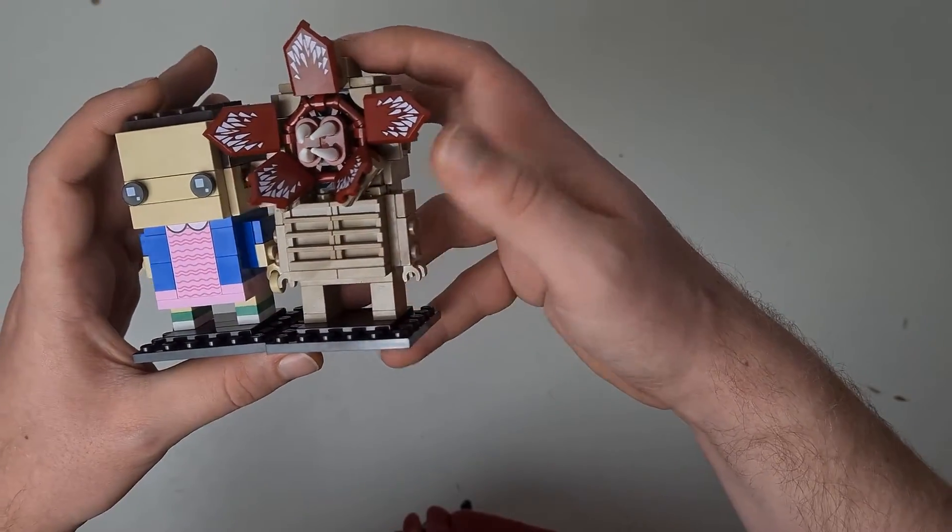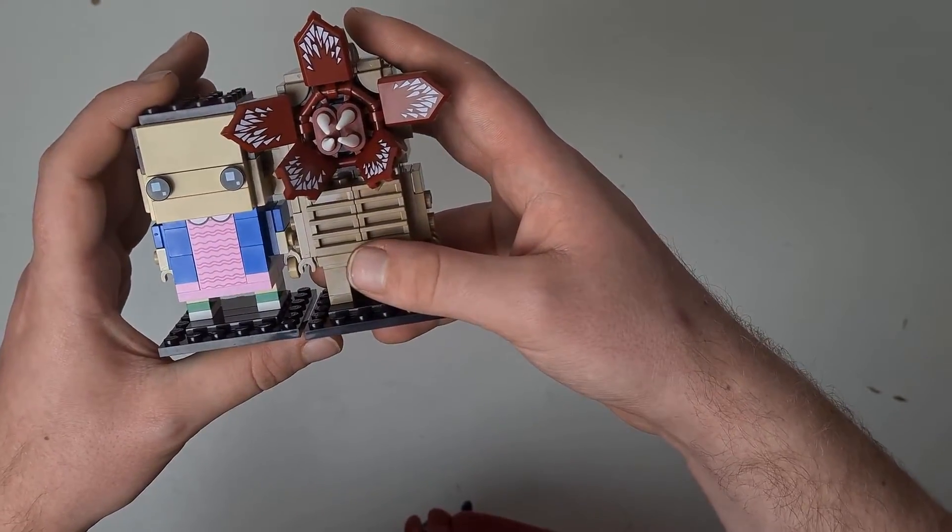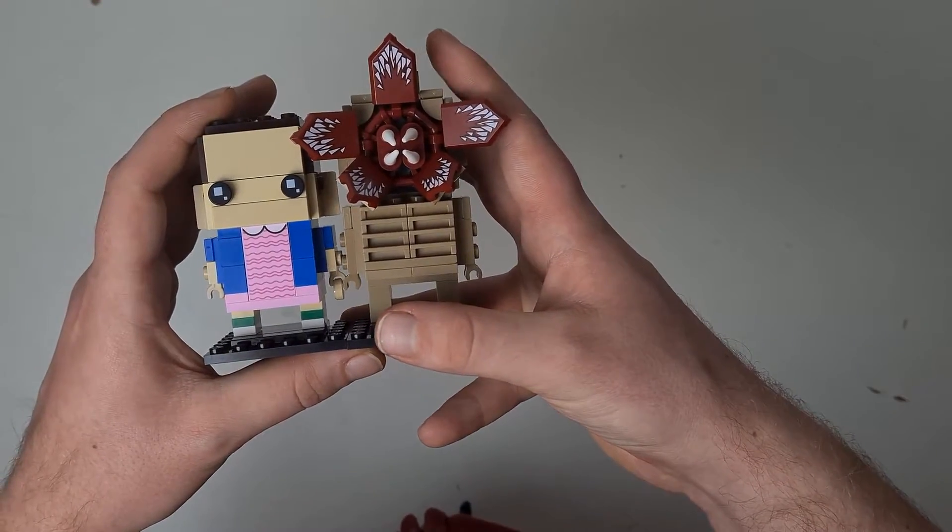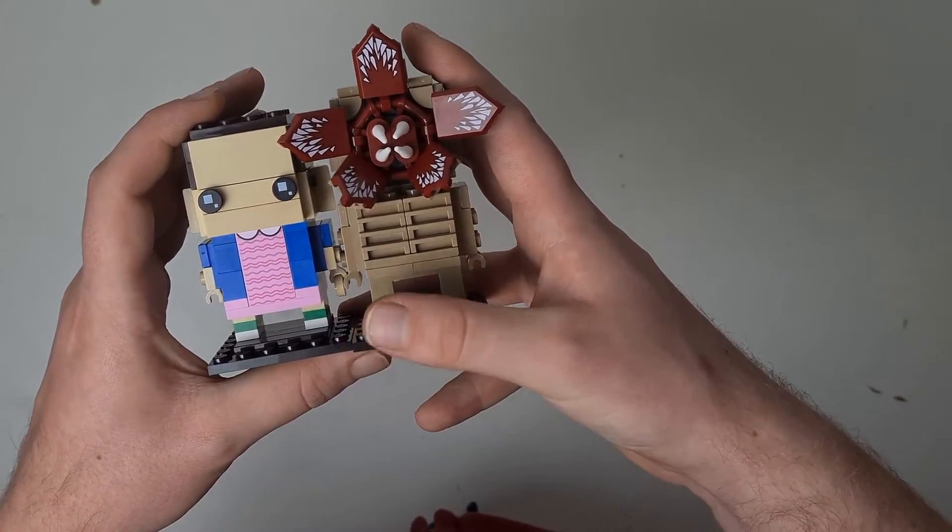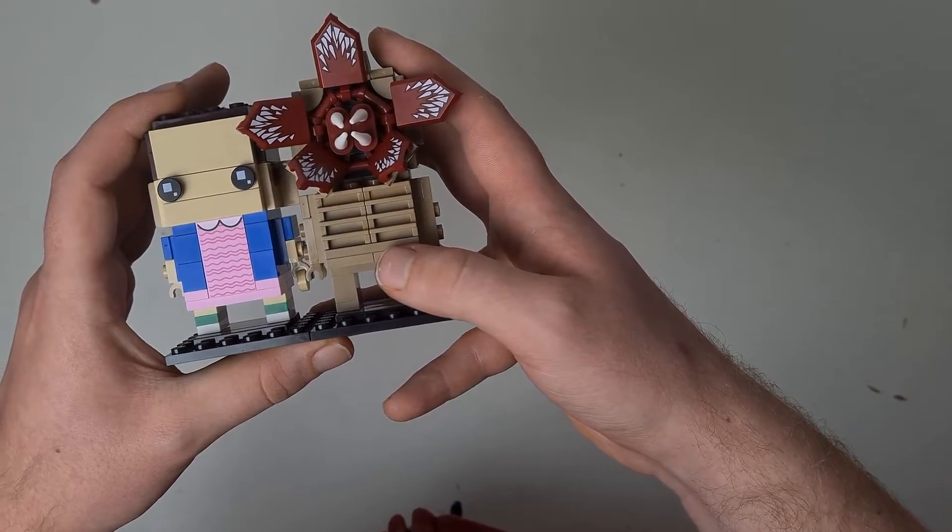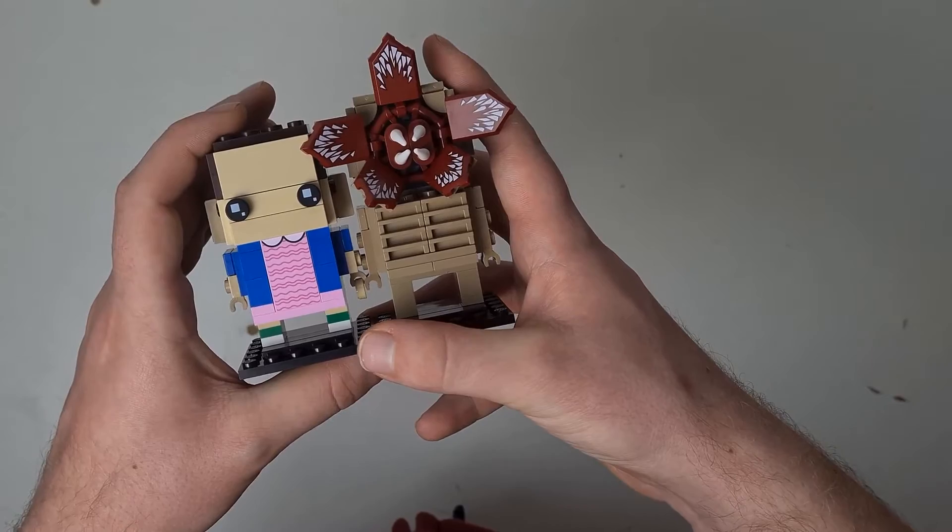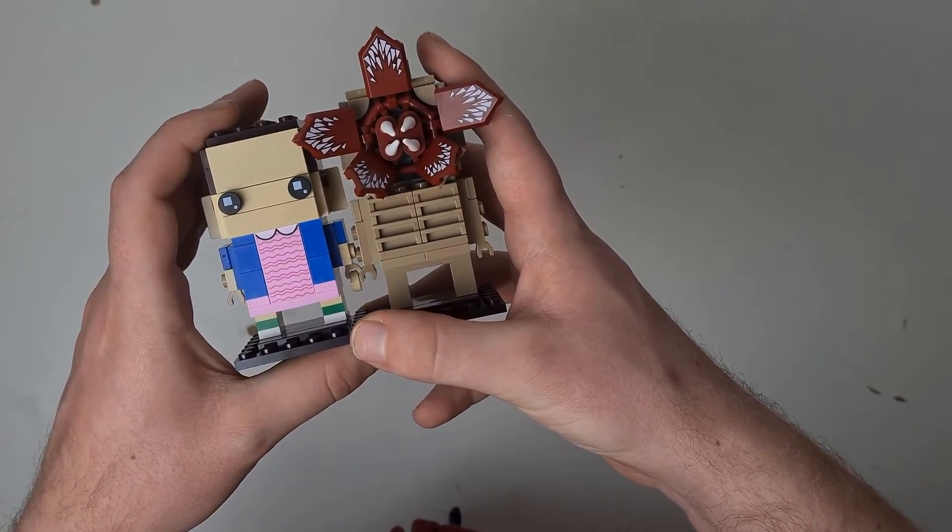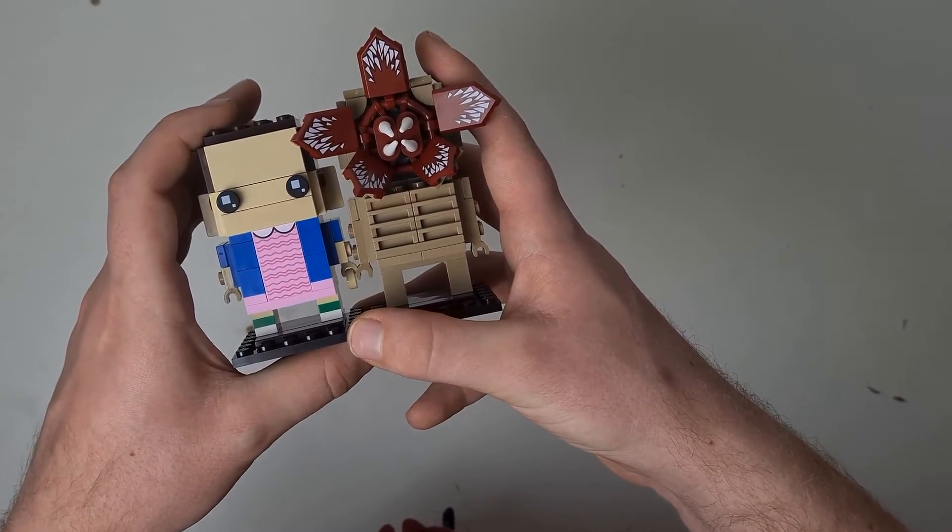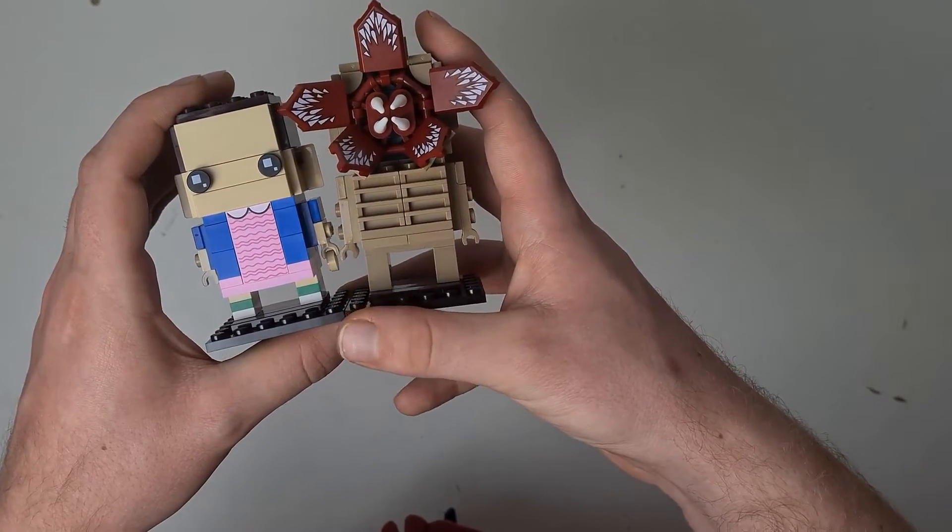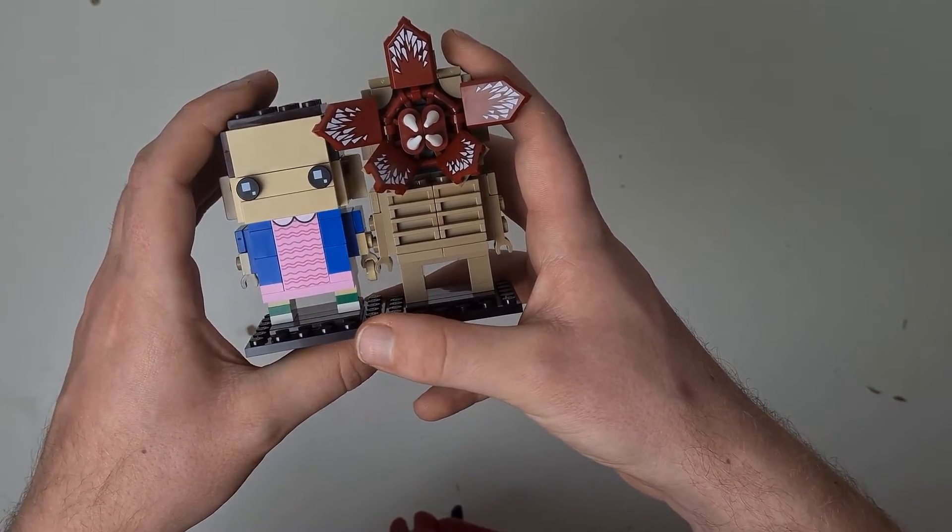The Demogorgon comes in at 9cm tall with Eleven just being slightly shorter. I would recommend these sets for any collectors of Stranger Things or Brickheads. If you missed out on the upside down set, rather than spending £500 on the resale market, this is a very good alternative. And I do very much recommend.